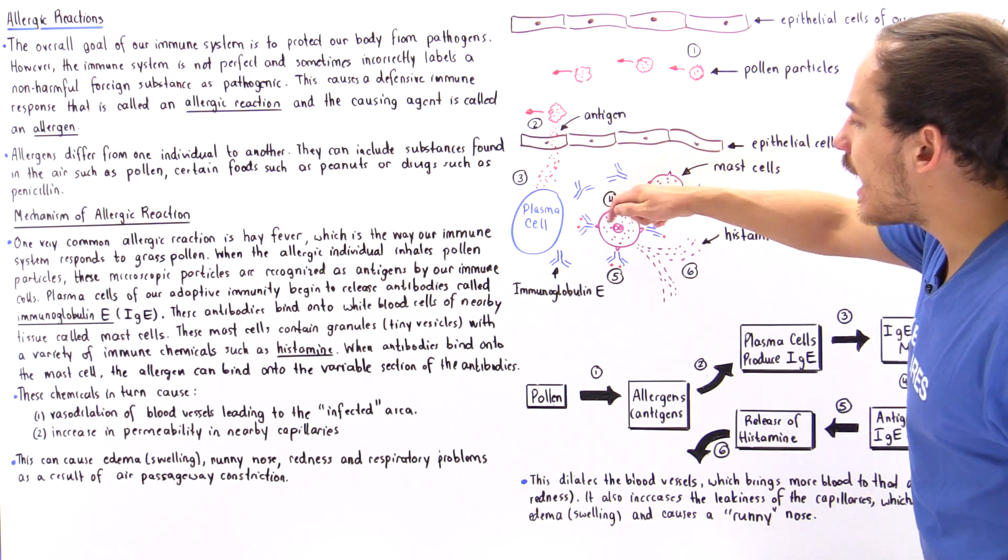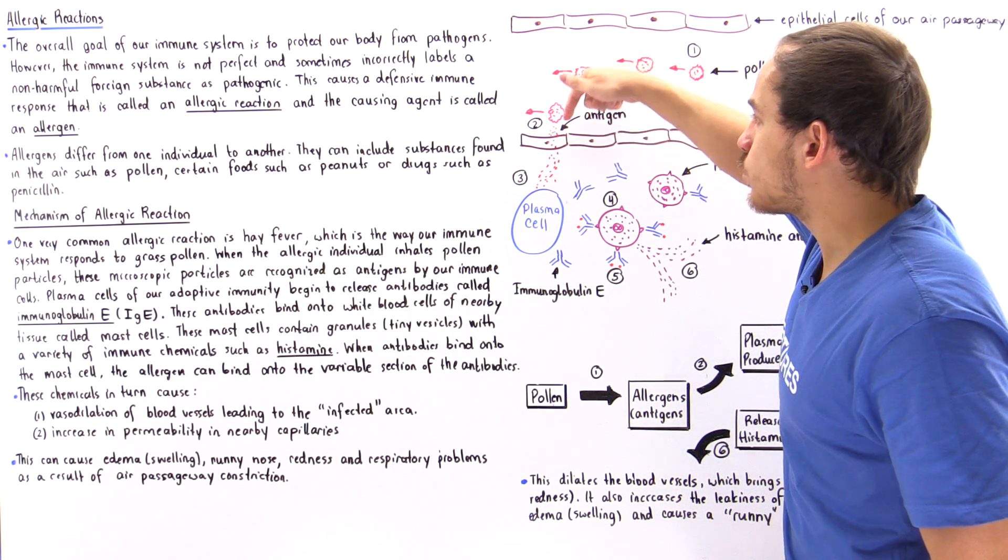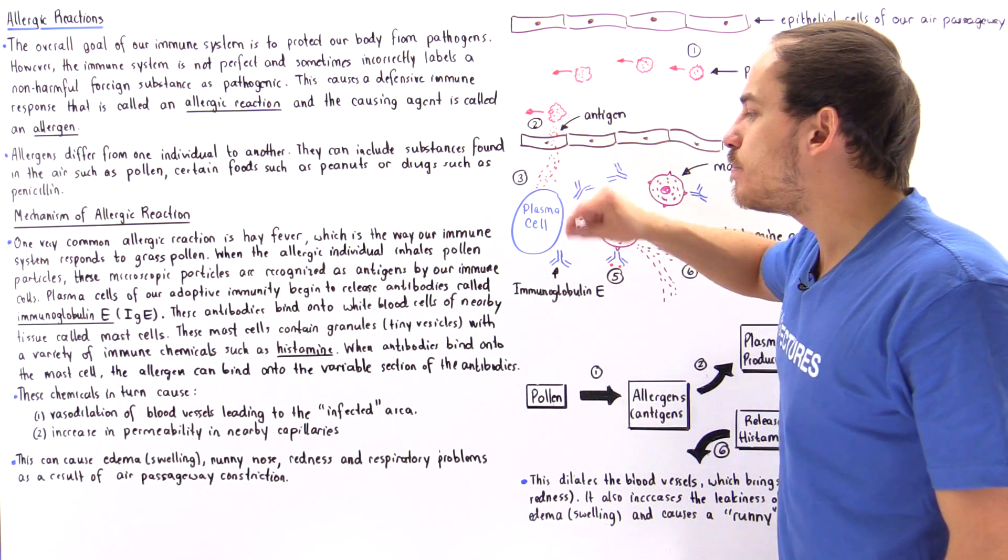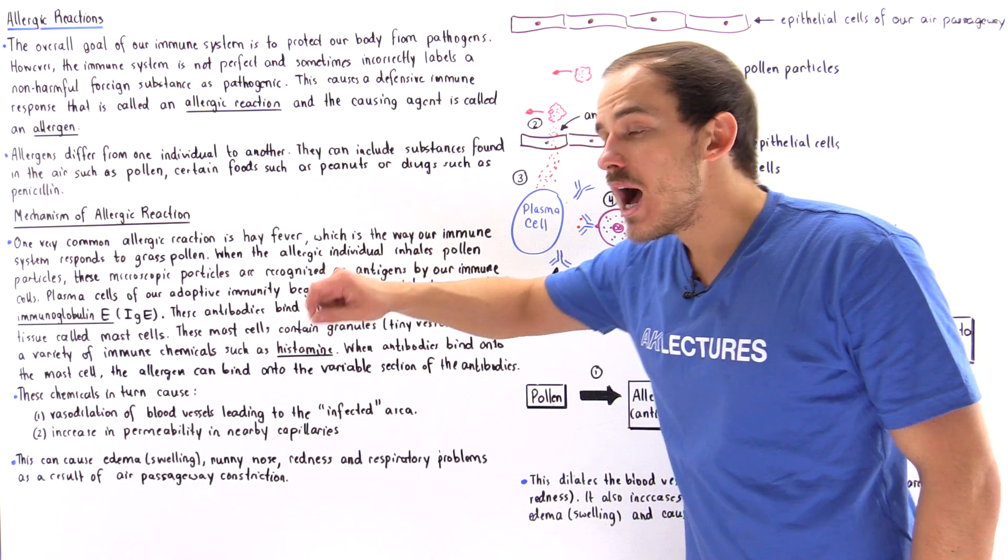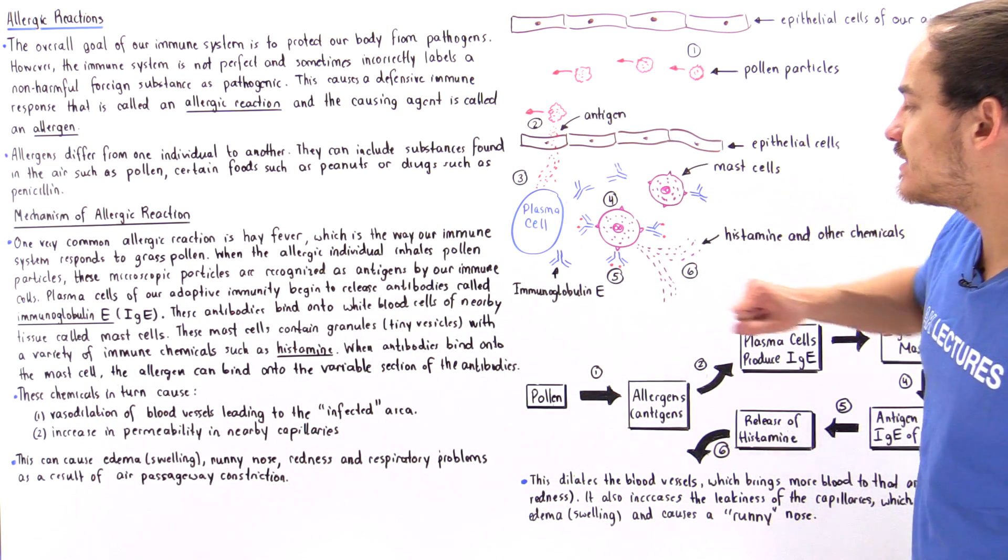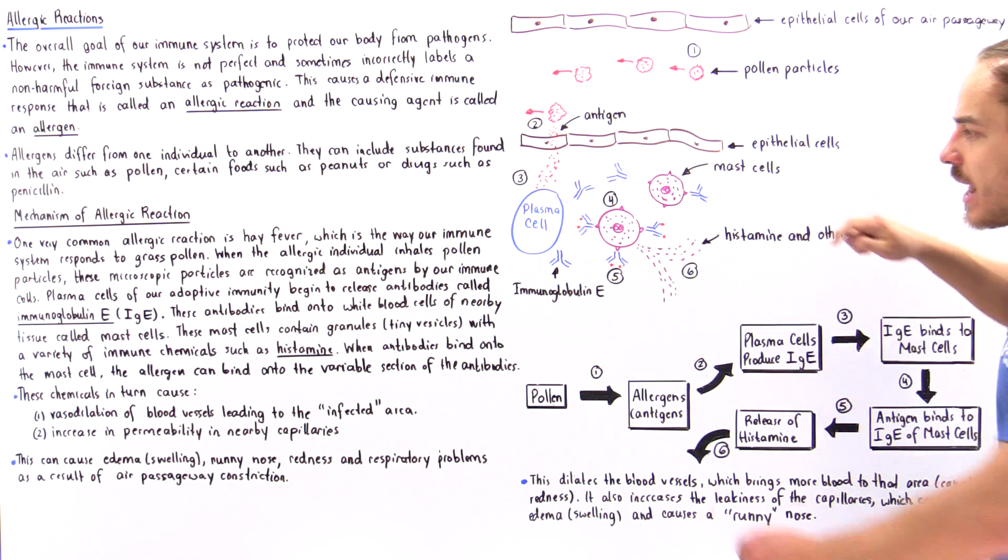Once the binding takes place, now these antigens that were released by the pollen particles can move on and bind onto the variable portion on our antibody as shown in this diagram in section 5.